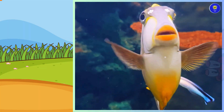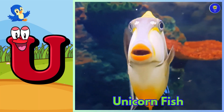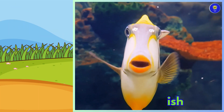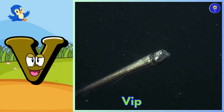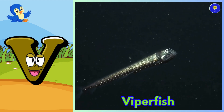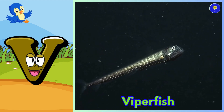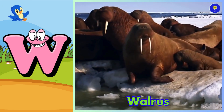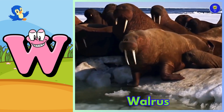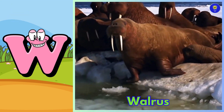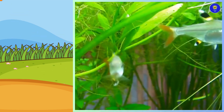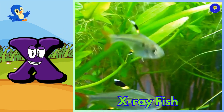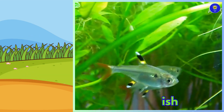U is for unicorn fish, uh, unicorn fish. V is for viperfish, v, viperfish. W is for walrus, w, walrus. X is for x-ray fish, z, x-ray fish.